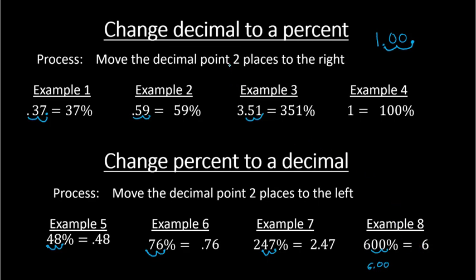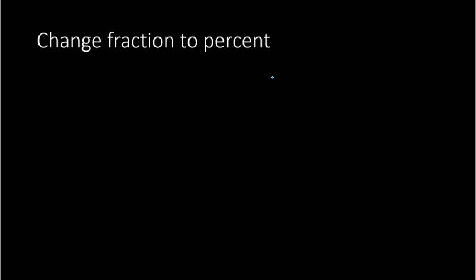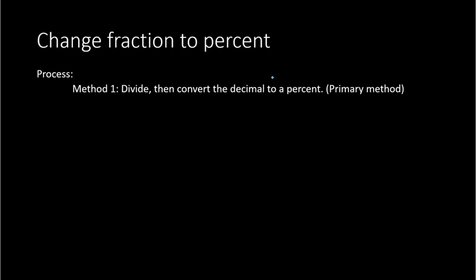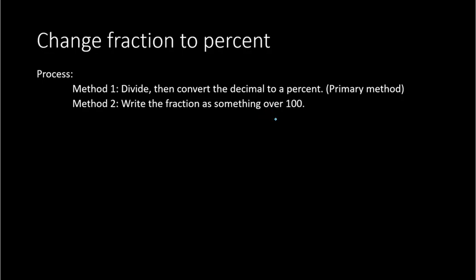We've learned how to convert between decimal and percent. Next, we're going to work with fractions — how do you convert a fraction to a percent, or a percent to a fraction? There are two different methods. Method one, which is our primary method, is to divide and then convert the decimal to a percent. Method two is to write the fraction as something over 100, but this only works when the denominator is a factor of 100.